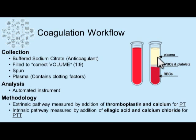Just like the hematology department, the coagulation department often uses an automated instrument for testing prothrombin time and activated partial thromboplastin time. For testing the prothrombin time, the sample is introduced to thromboplastin and calcium, and the amount of time from introduction to clot formation is the prothrombin time. The activated partial thromboplastin time is measured by introducing ellagic acid and calcium into the sample and measuring the time from addition of those two reagents to clot formation.